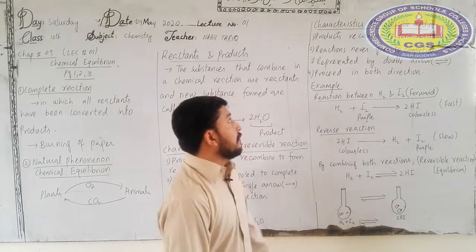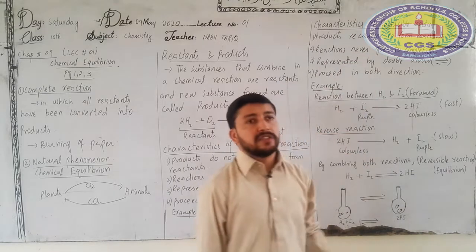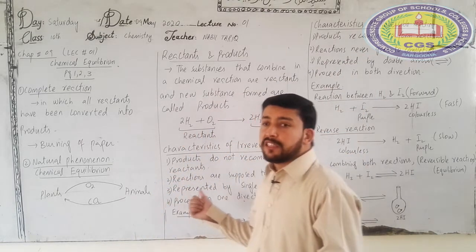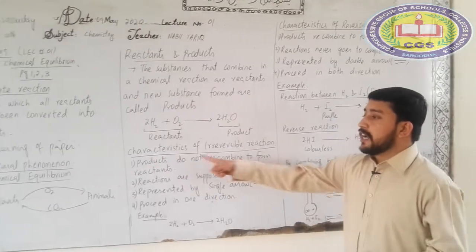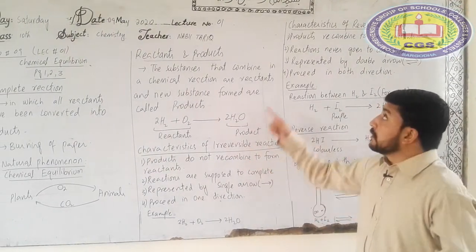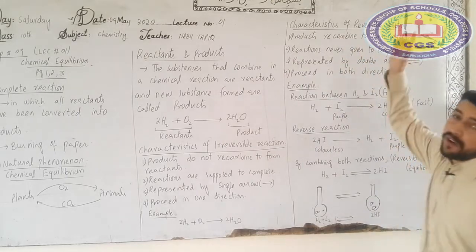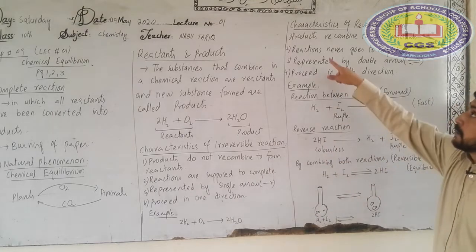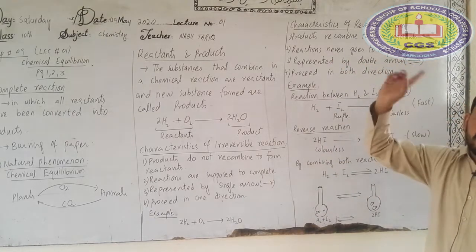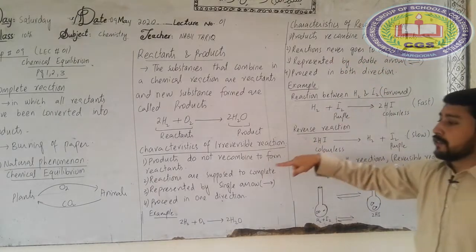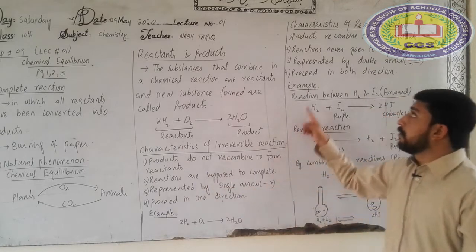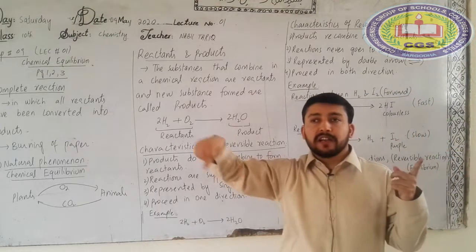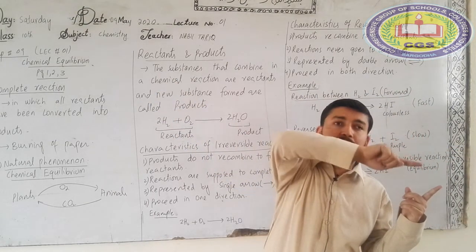The characteristics of a reversible reaction: a reversible reaction can proceed in both directions. Products can re-combine to form reactants. Reactions never go fully to completion in one direction; they can proceed in all directions, represented by a double arrow. The reactions can go both forward and in reverse to form products.